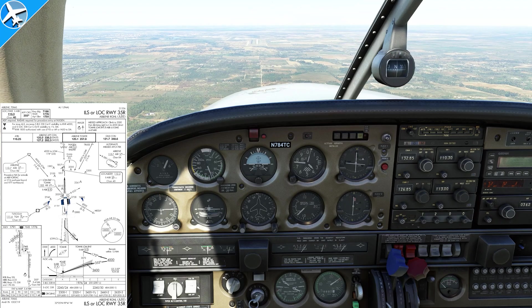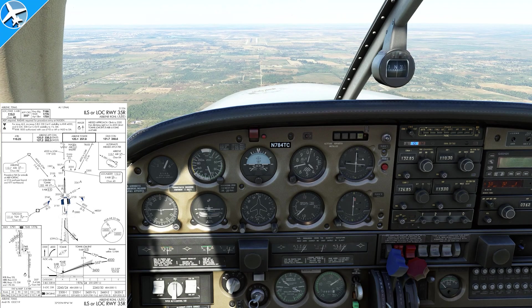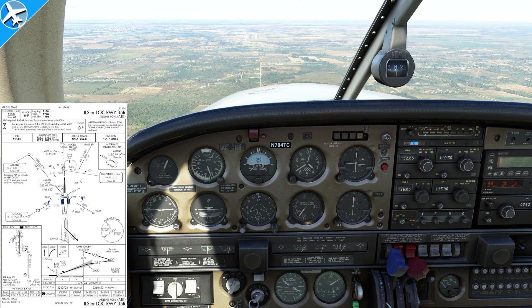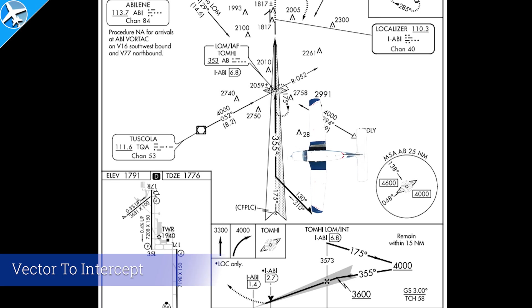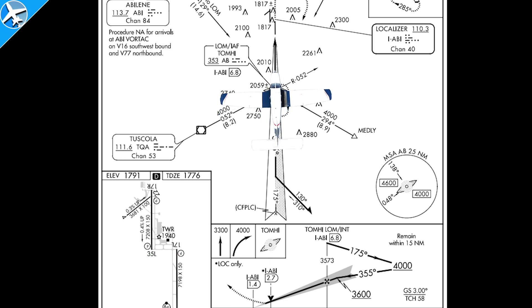Flying IFR, you're going to hear an approach clearance like that most of the time. But there will be times where you'll get a heading to intercept the final approach course but an approach clearance may not be given with that vector. Sometimes something like this might be heard: November 4 Tango Charlie, turn right heading 325, intercept the localizer. Here the new heading would be flown, the localizer intercepted, and you are not cleared to descend from the previous assigned altitude.